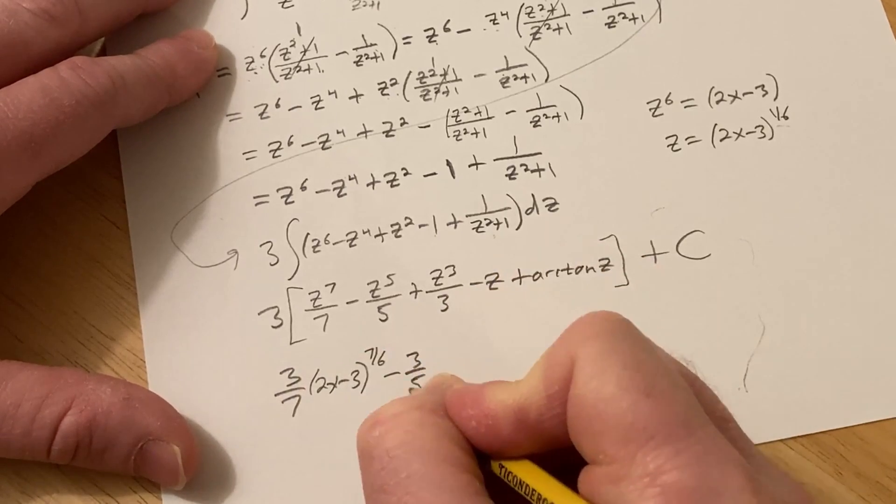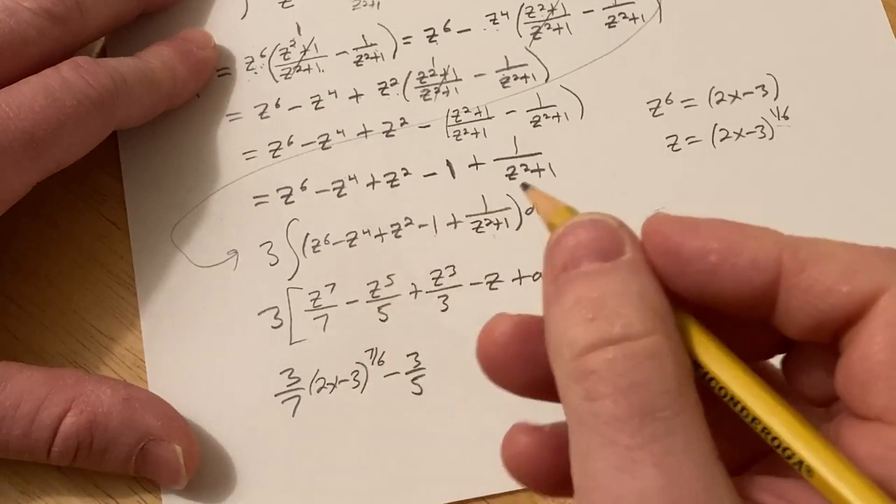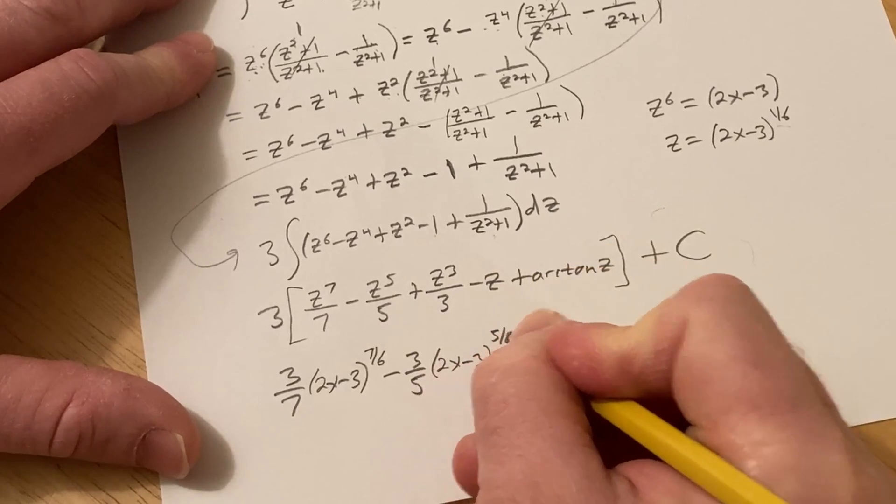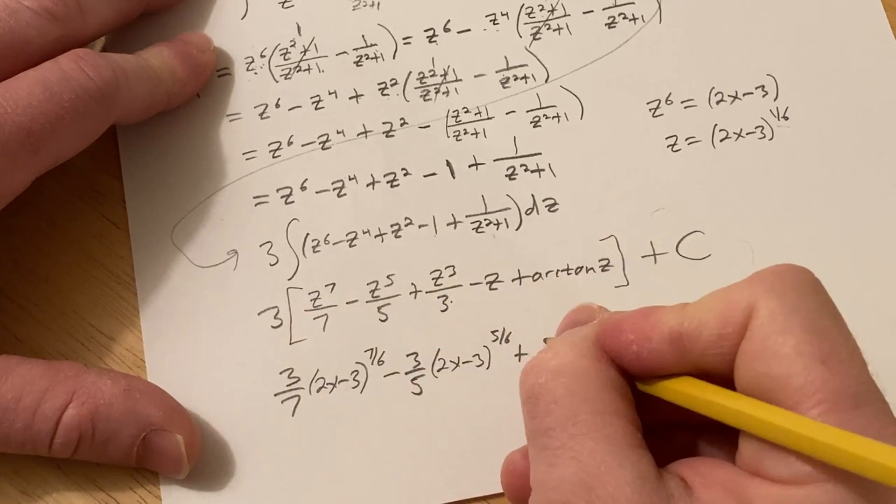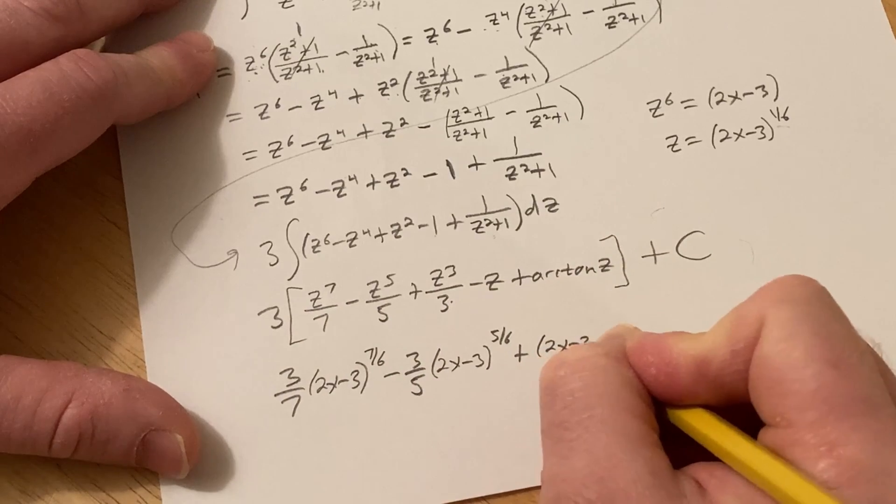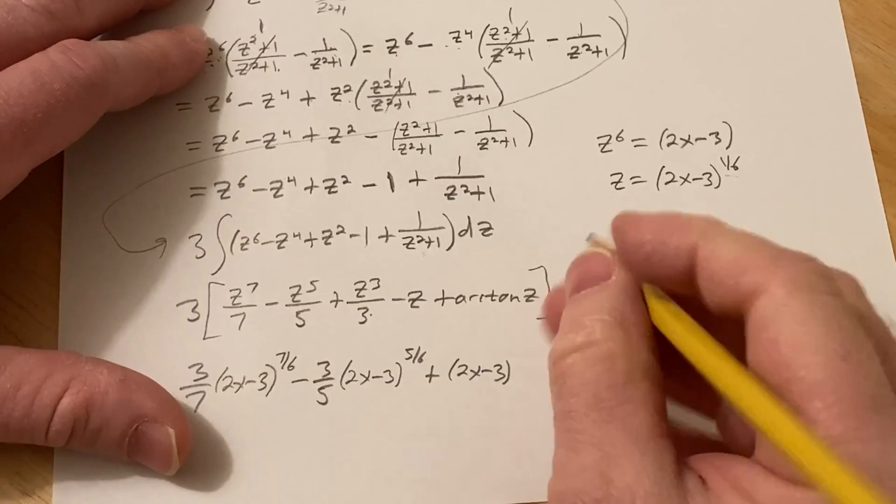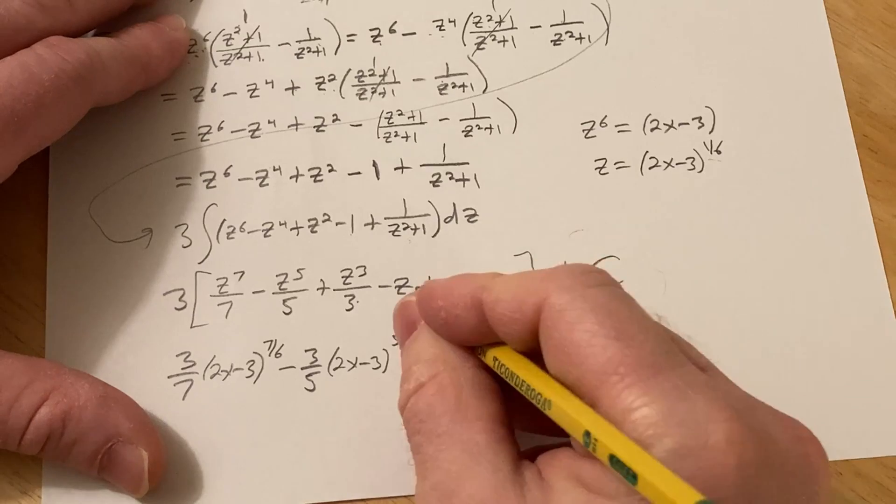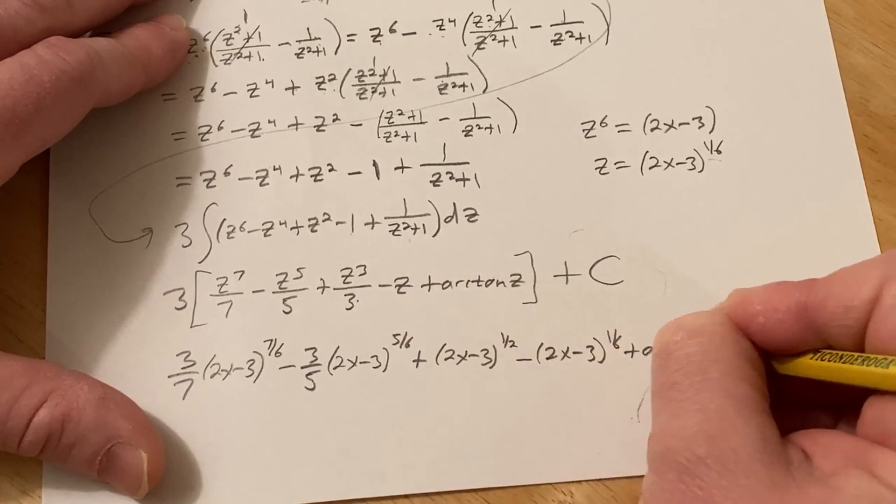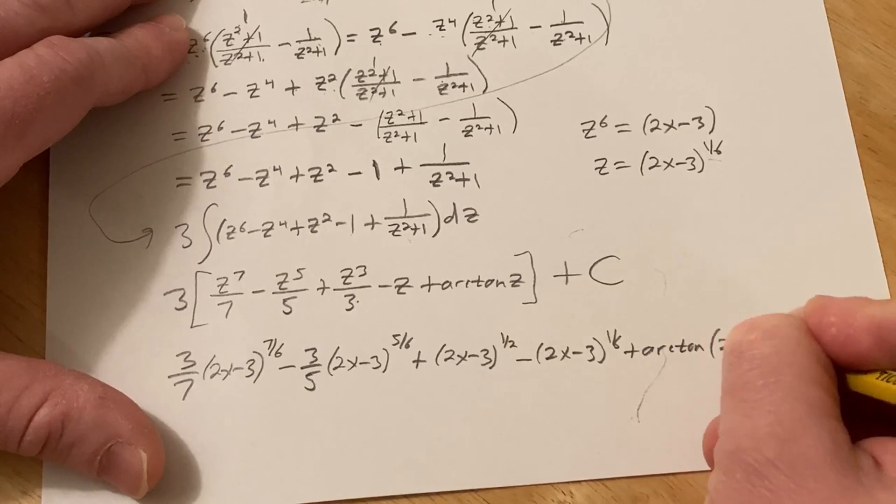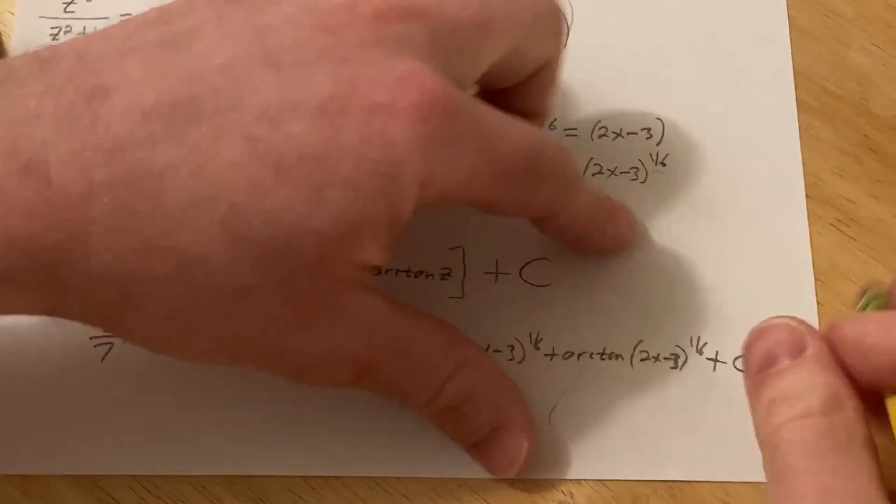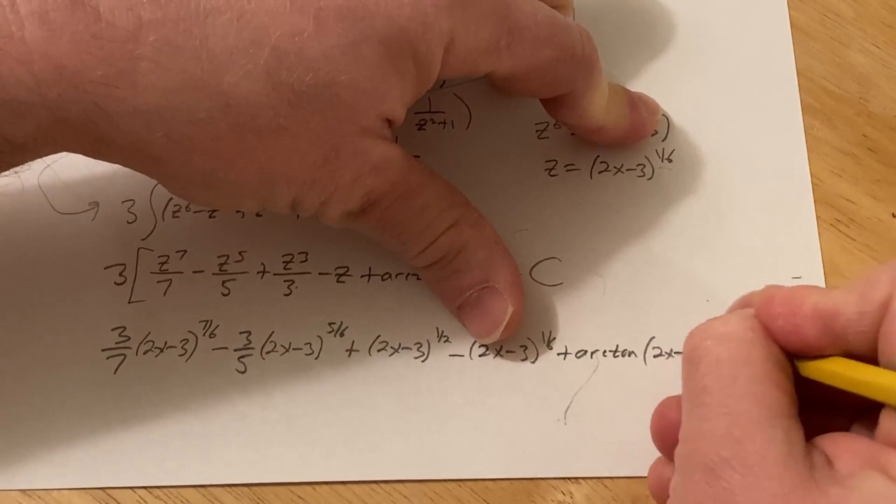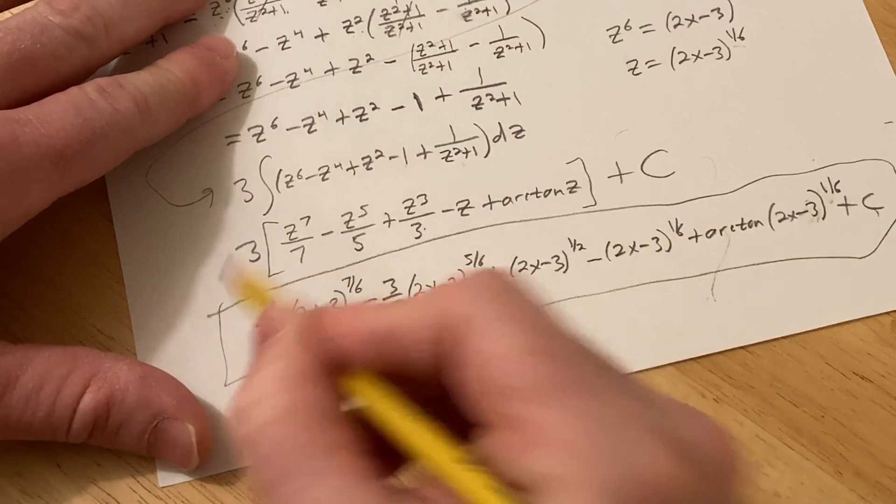I only verified the division prior to the making of this video. This will be (2x-3)^(5/6) plus, and 3 over 3 is just 1, so it'll be (2x-3)^(3/6), that'll be 1/2, minus (2x-3)^(1/6), that's the z, and then plus the arctan of (2x-3)^(1/6) plus C. Let me just clean that up, make it a little bit cleaner for you. Hopefully camera's not shaking too much. Brand new setup. I'm liking this because I can just do my math and I can record it.